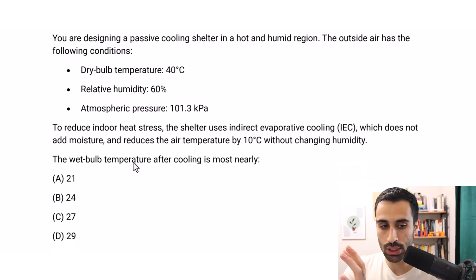So visualize this. What's going on? Dry bulb temperature, that's the temperature we start with, 40°C. Then we use this fancy system called indirect evaporative cooling to reduce this air temperature by 10°C. What's the air temperature? The dry bulb temperature. When they say air temperature and they don't specify wet or dry, it's always dry bulb temperature.